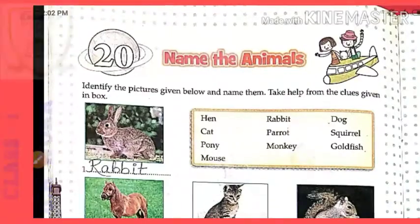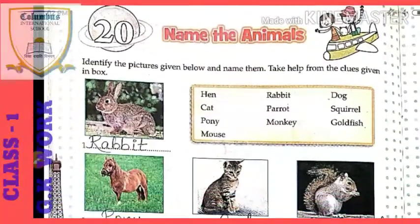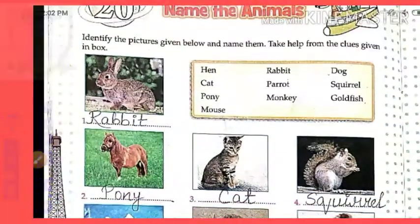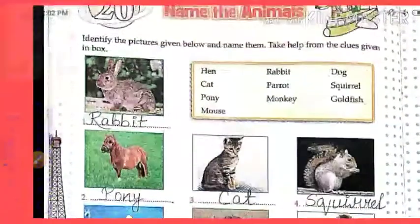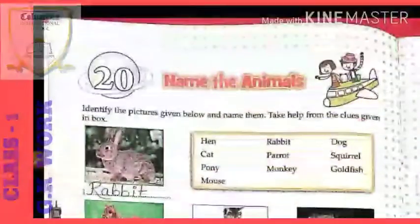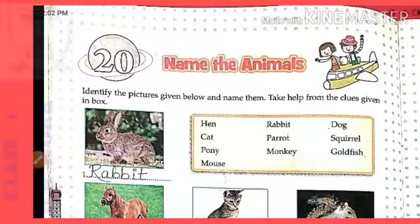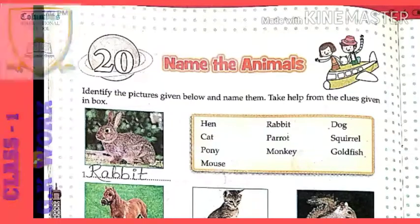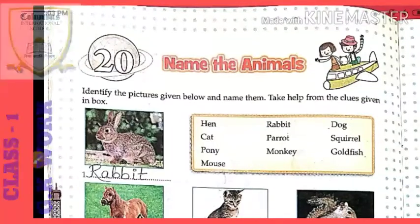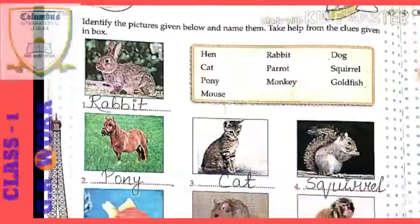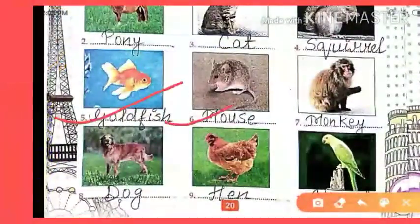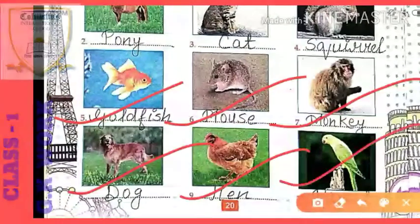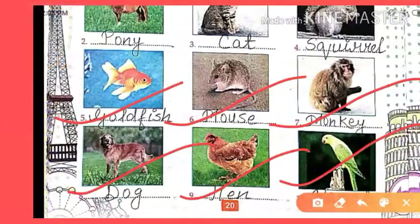So that was today's exercise about animals — we read and wrote the names of all these animals below their pictures. Now your work is to fill in all the animal names below the pictures. If you learn all these animals, you will learn at least 10 animal names. Note them down, learn all the spellings well, complete your book, and send it via the school application. The animals in order are: rabbit, pony, cat, squirrel, goldfish, mouse, monkey, dog, hen, and parrot.